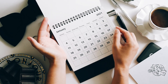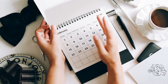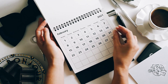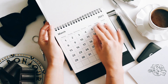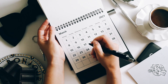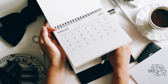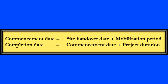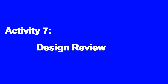Activity number six: preparation of the master work schedule. You need to review the estimates and schedule prepared during project bid or negotiation time, based on actual facts on the ground. Once site handover is done and mobilization is over, you will identify the critical path of your project all the way from the commencement date to the completion date.